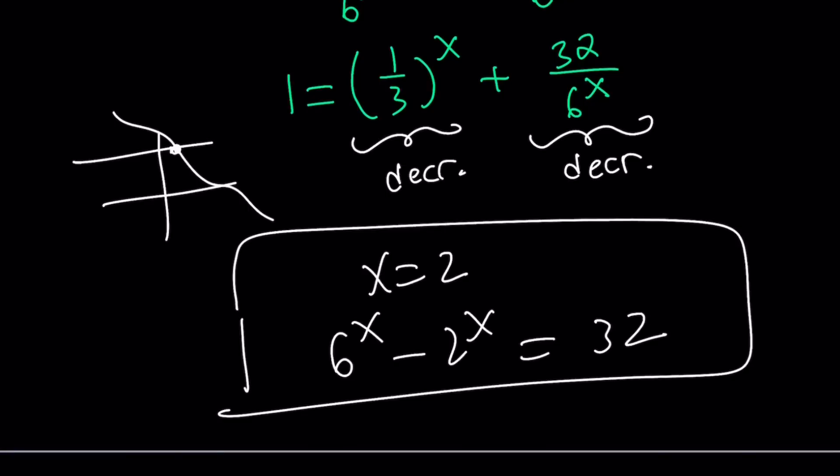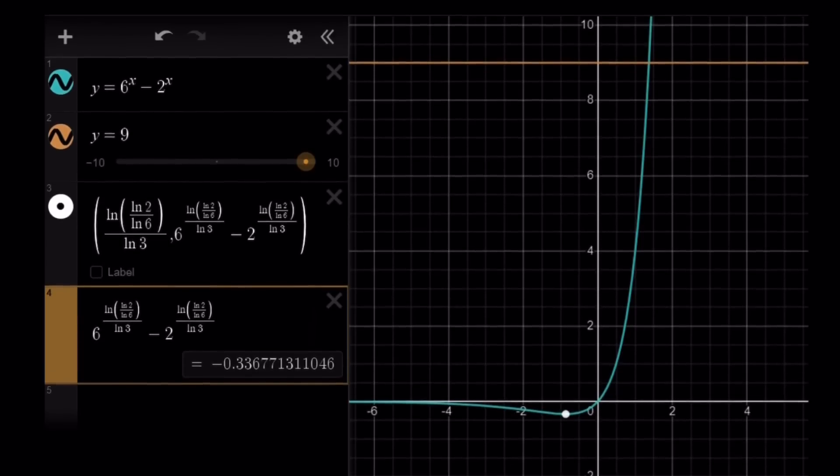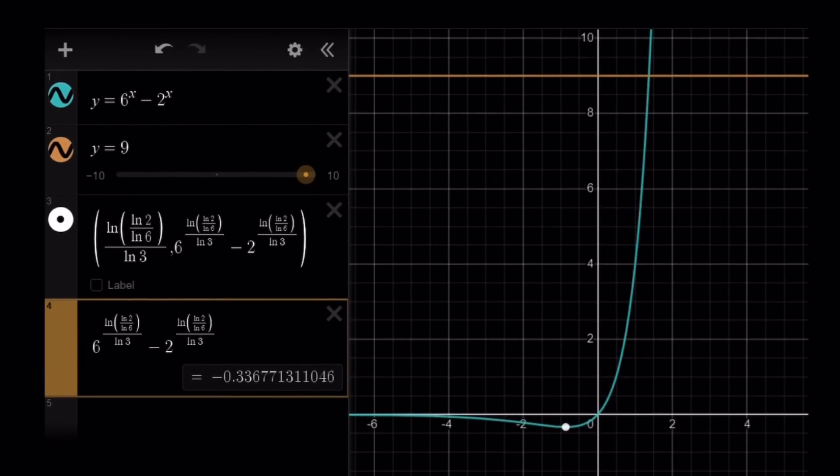So the graph kind of gives you this picture, and notice that this beautiful point, right? This beautiful point is where f has a minimum. And by the way, you can pretend that this is y equals 32, not y equals 9, because I messed up on the graph, apparently. Anyways, you get the idea, hopefully. x equals 2 is the only solution to this equation.